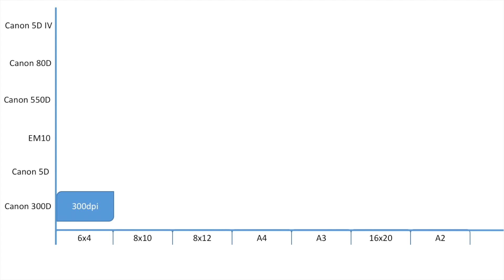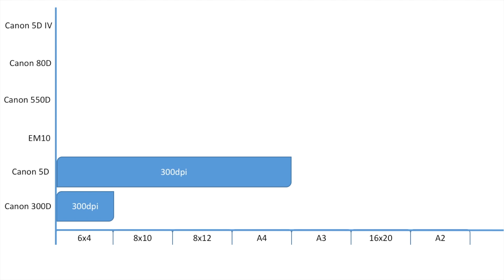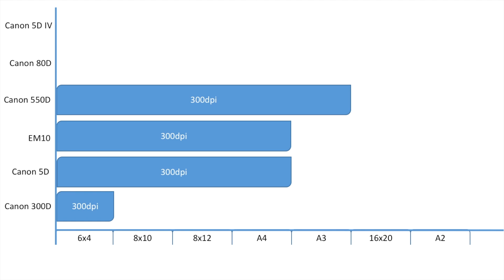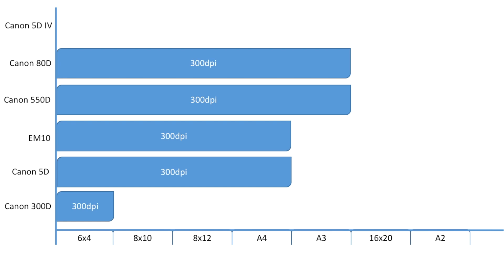Of course, displaying things on a monitor and over the internet it's going to be fine, but for printing it can only go as high as six by four. The Canon 5D at 300 DPI can print comfortably up to A4 but not over — same with the EM10. The Canon 550D can print comfortably up to A3. You might think there's a huge difference with the Canon 80D, but actually it doesn't have enough megapixels to print a 16 by 20 at 300 DPI.